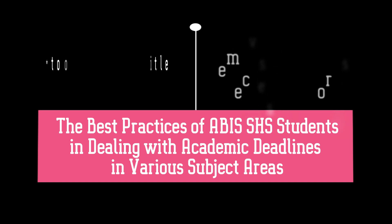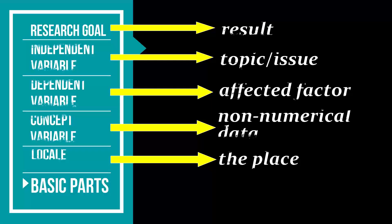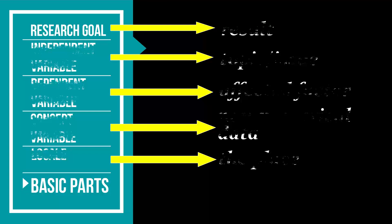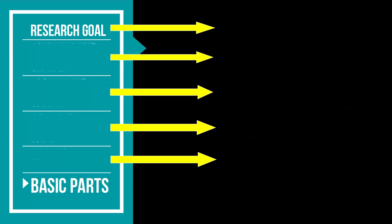You must eliminate unnecessary words and retain only the key ones, which would basically show the following basic parts of a title: research goal — the result of the study; independent variable — the topic or issue; dependent variable — the variable affected by the independent one; concept variable — the variable that cannot be counted or quantified; and the locale — which specifies the place where the research is conducted. These basic parts of a research title will be discussed in the next video lesson.